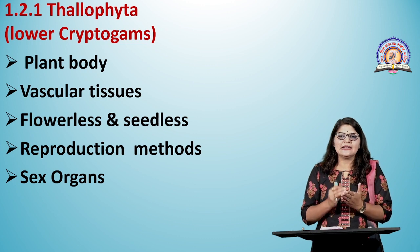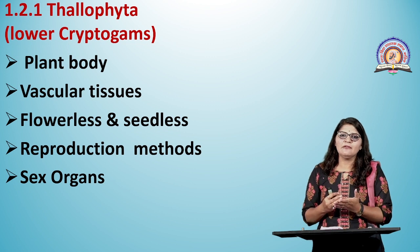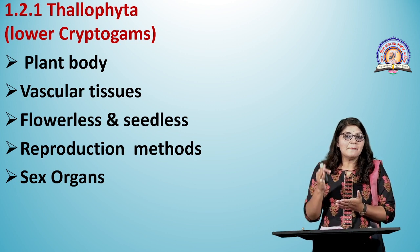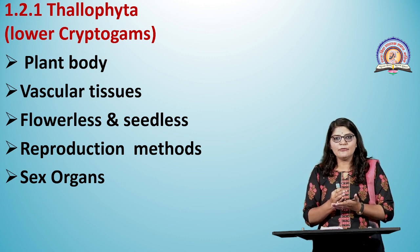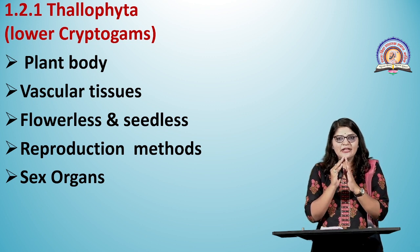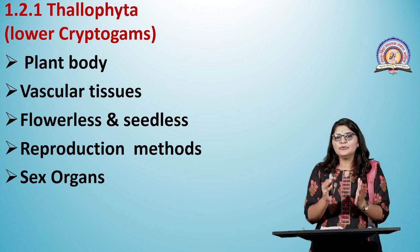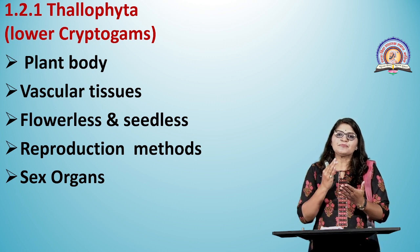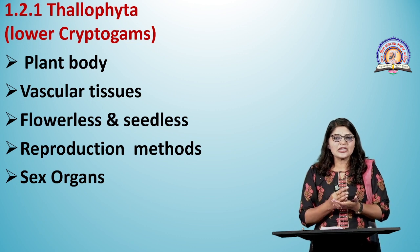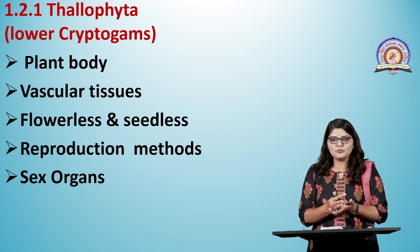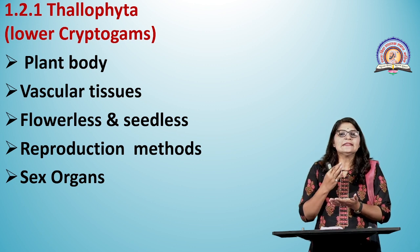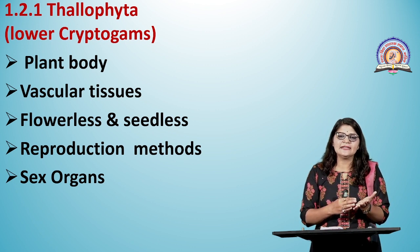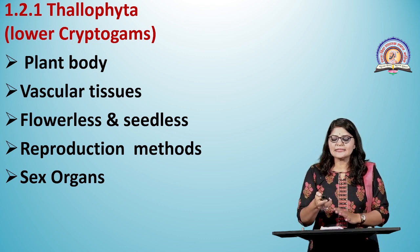Thallophyta plants do not produce flowers or seeds. They reproduce by three methods: vegetative reproduction through fragmentation, asexual reproduction through variety of spores like aplanospores and zoospores, and sexual reproduction through gametes via sex organs — anthridia (male sex organ) and archegonia (female sex organ).